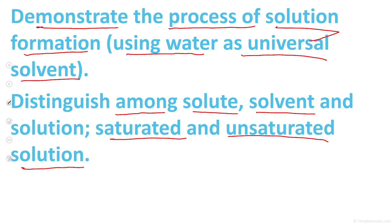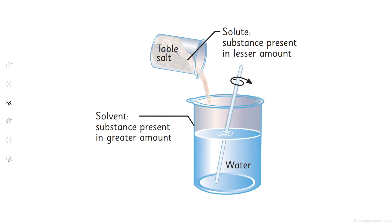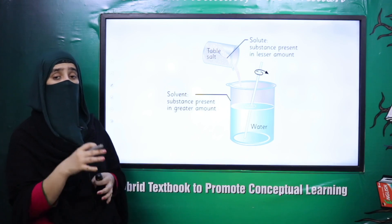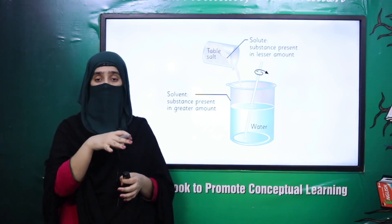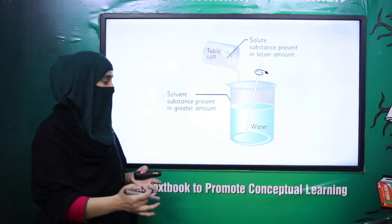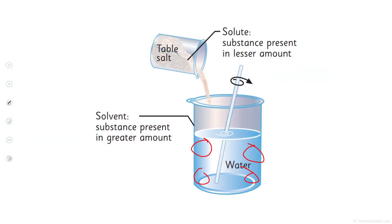Sab se pahle hainne kya seekha? Hainne solution ki formation seekhi, water ko as a universal solvent lete huwe. Solution dekha ke solution kya hota hai — hainne namak aur pani ko mix karke uska solution banaya. Solution woh homogenous mixture hain jis mein kisi bhi jagah pe us mixture mein jo composition hai, solute ki aur solvent ki, woh same hooti hai.